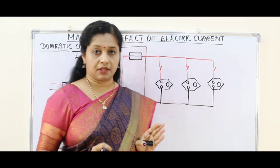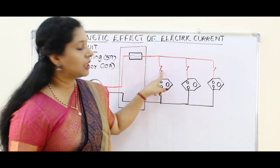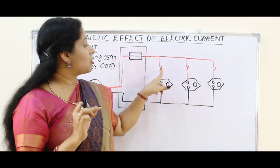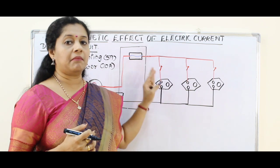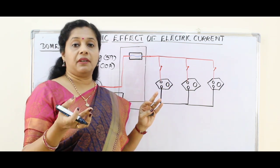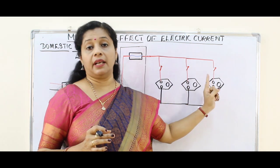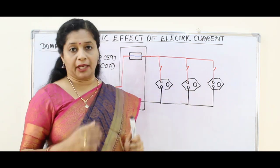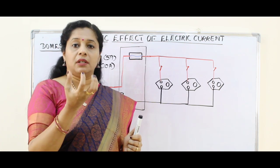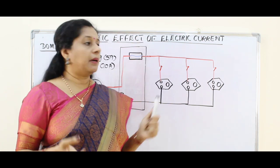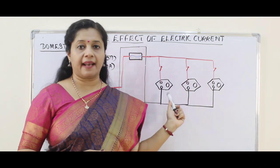Why are we preferring parallel connection here? First, we can operate them individually — they all have their own switches connected to the live wire, because we want to cut off the current. Every appliance can be operated individually, irrespective of the others. Second, the same voltage is available to every gadget. In a series connection, the voltage would get distributed, so the bulb may not glow fully; but here, since equal voltage is available, they all glow properly. That is why we have parallel connection in our household.